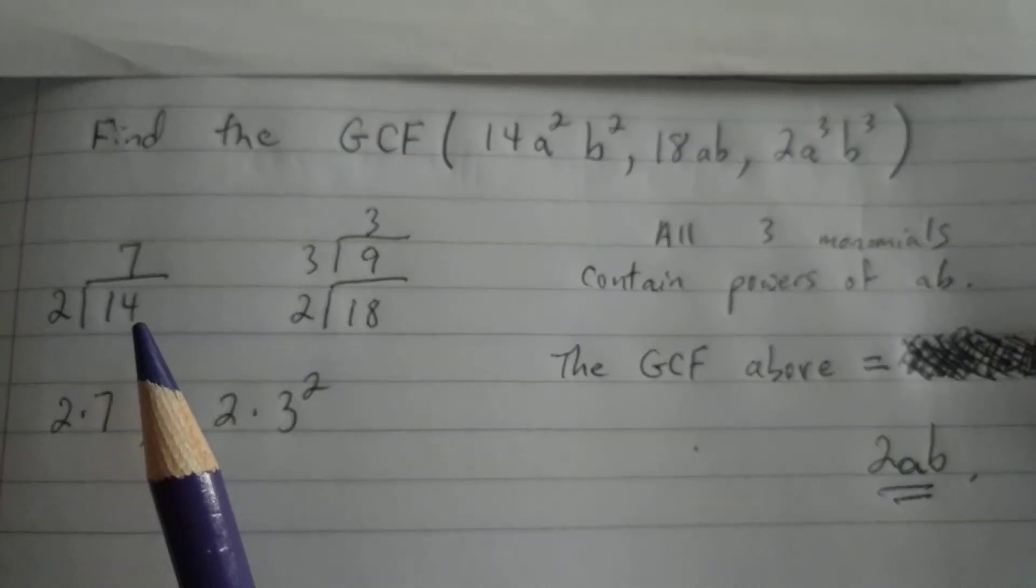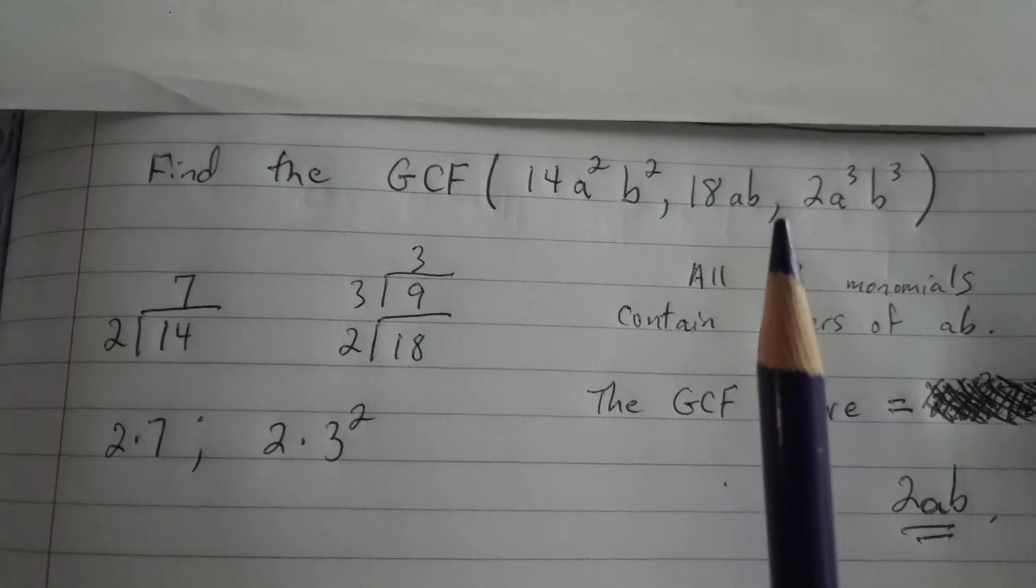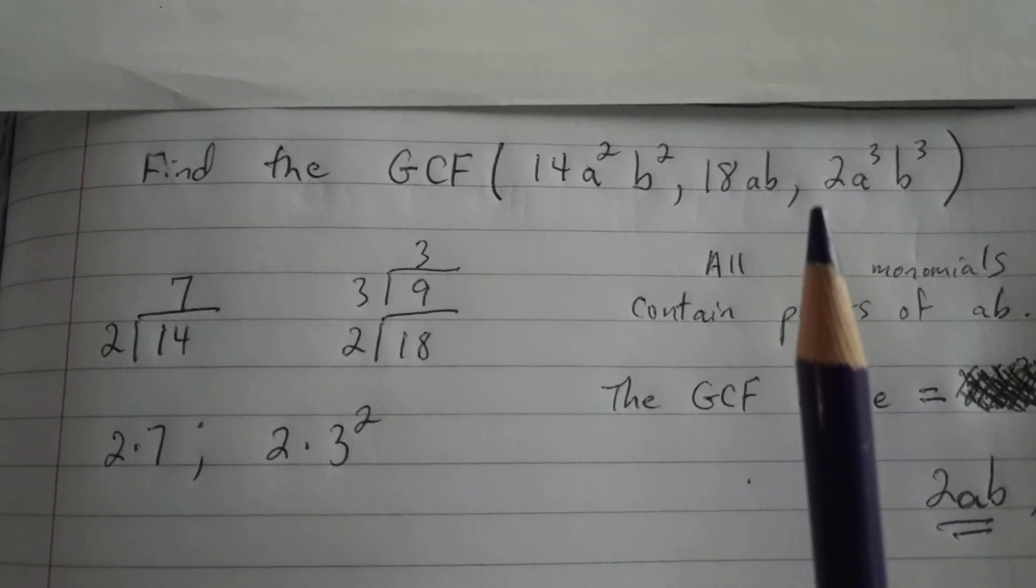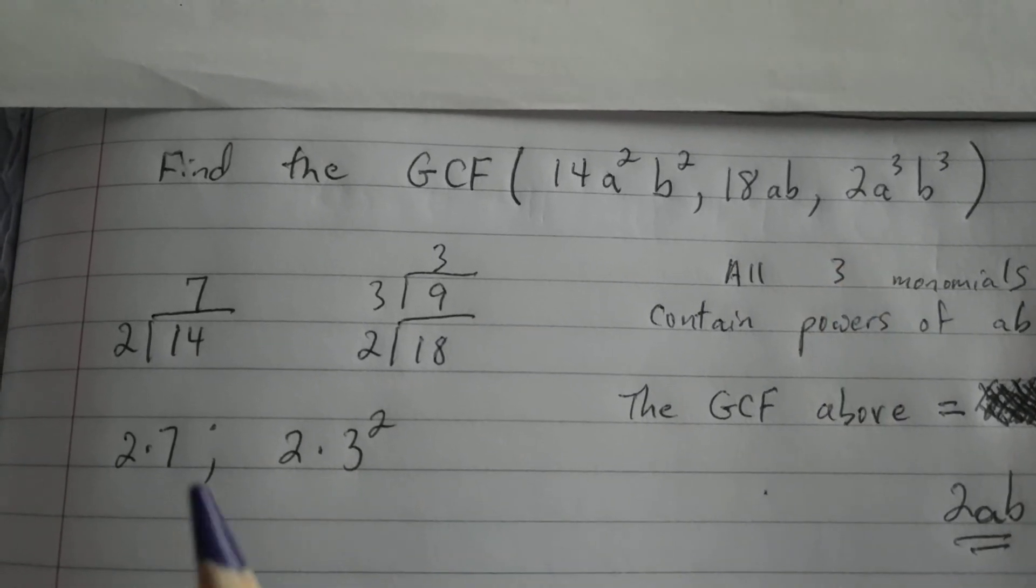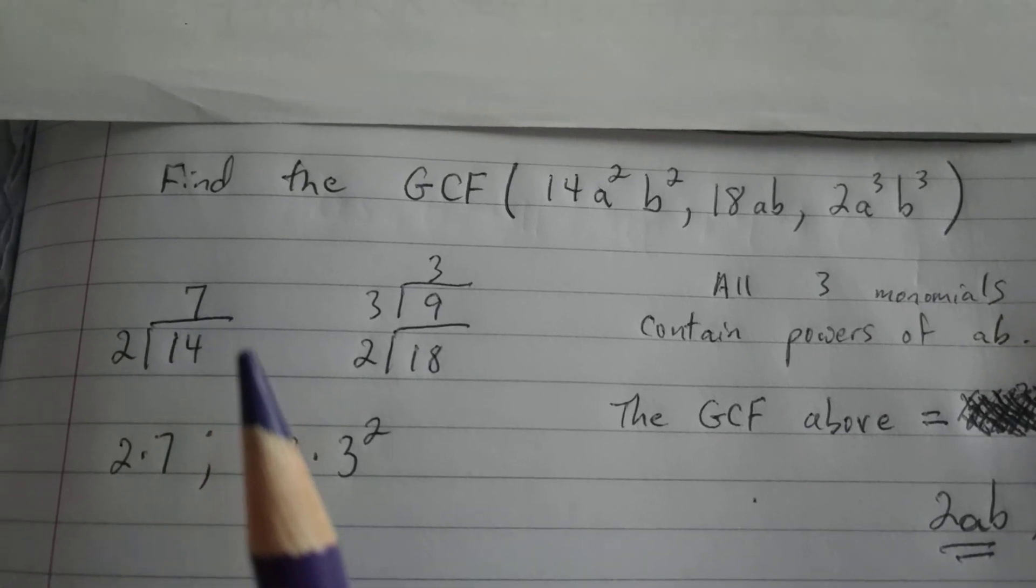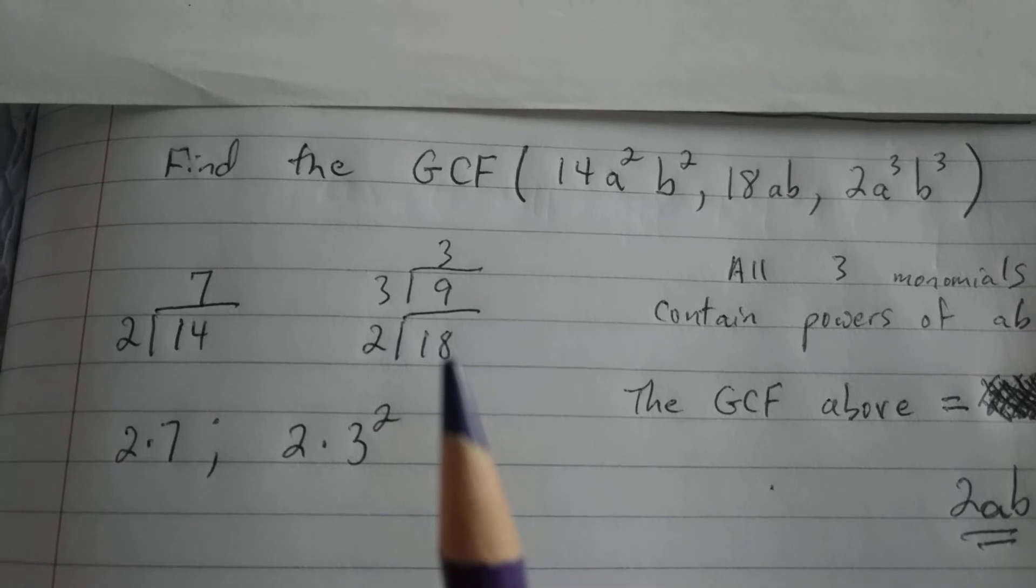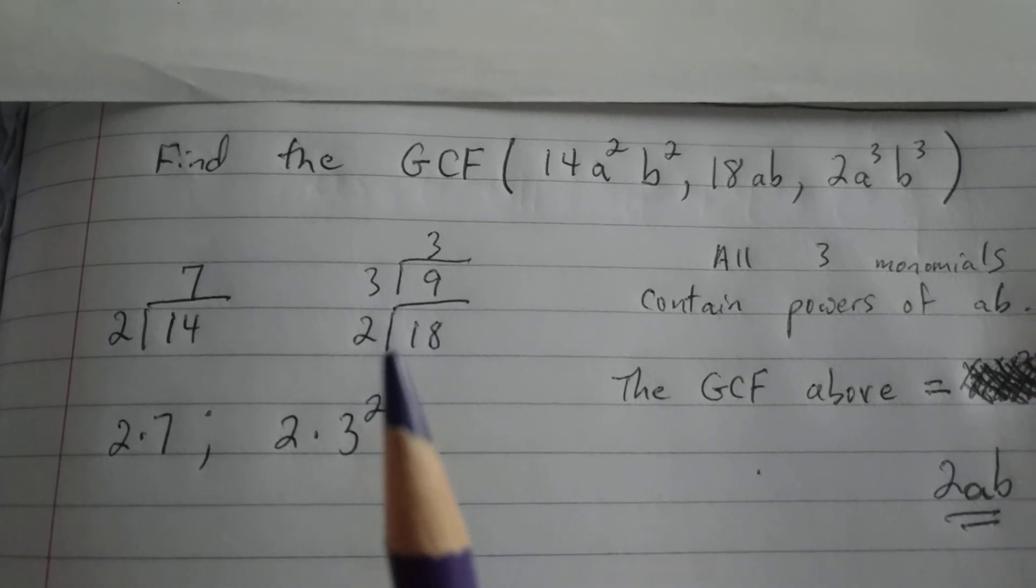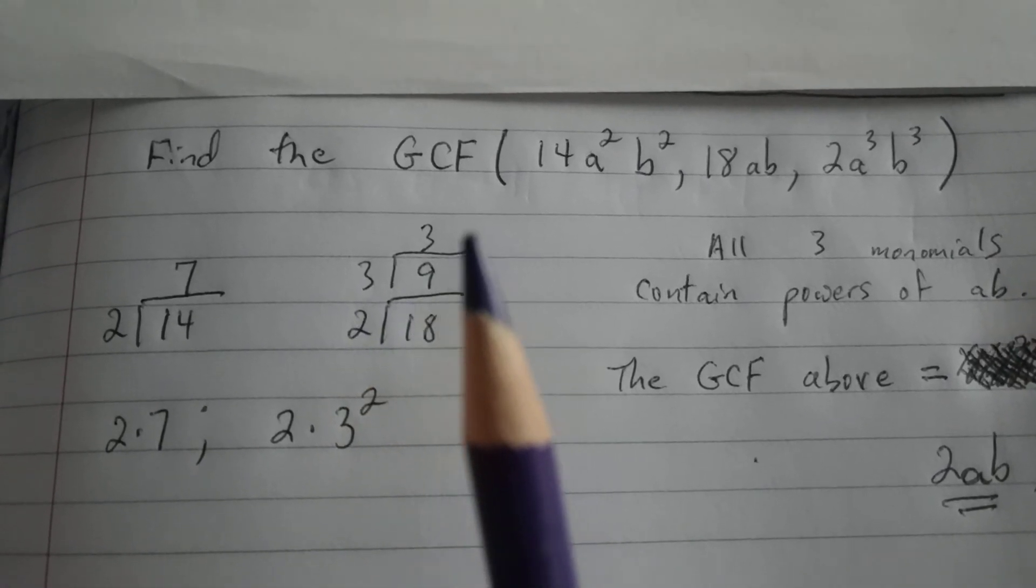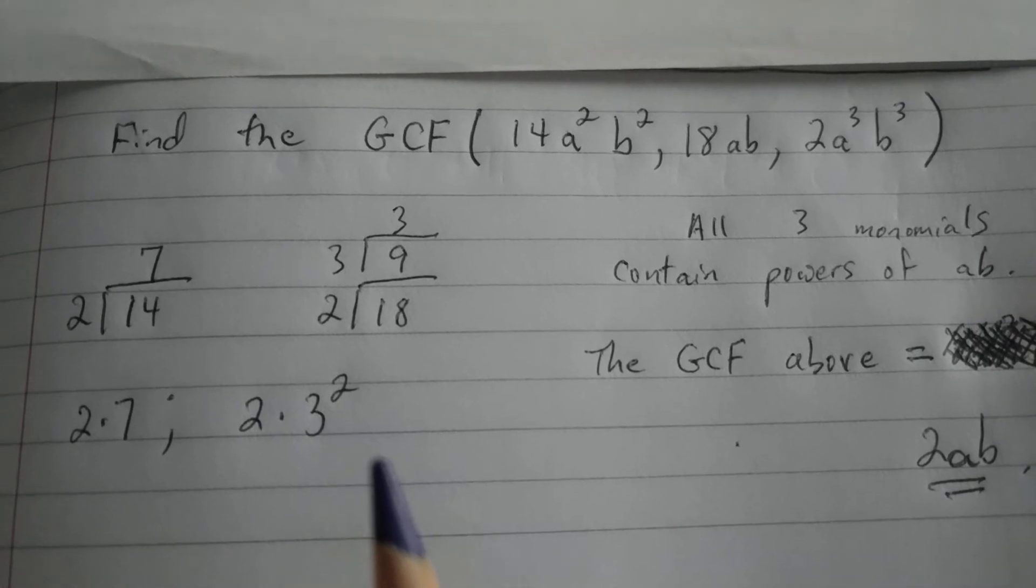We begin by prime factoring the coefficients 14 and 18. We don't need to worry about the 2, because 2 is a prime number, and so it's already prime factored. 14 is even, it's divisible by 2, 2 divides 14 7 times, so 14 prime factored is 2 times 7. 18 is even, it's divisible by 2, 2 divides 18 9 times, 3 divides 9 3 times, so 18 prime factored is 2 times 3².